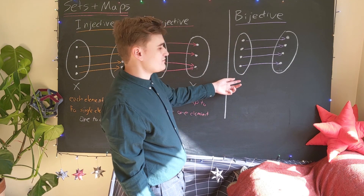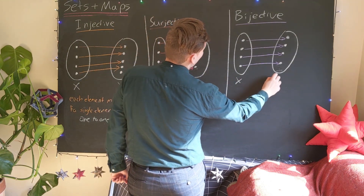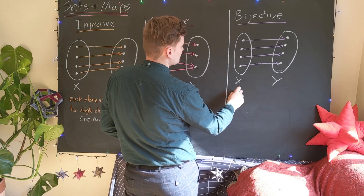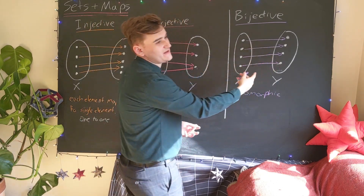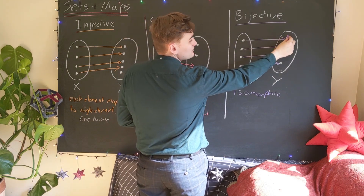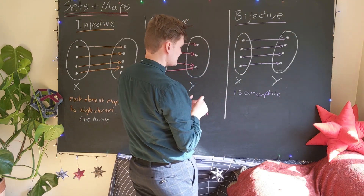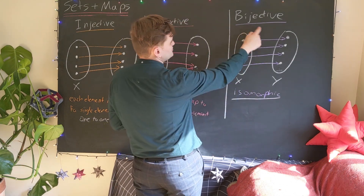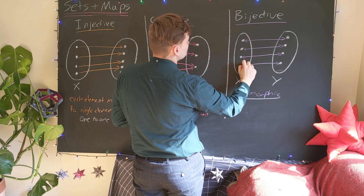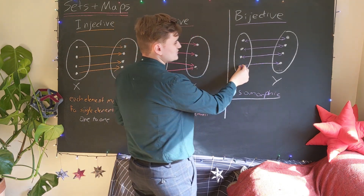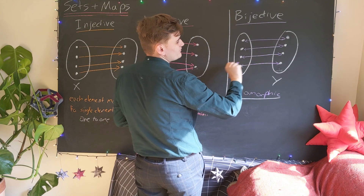A bijective map is the kind of map we're most interested in, because if we can construct a bijective map between two sets, then those two sets are said to be isomorphic — with the caveat that this map has to be invertible, meaning there's a concrete way to go in the other direction. If two sets are isomorphic, the elements of one set can be talked about as being the same, in a sense, as the elements of the other set, because we can freely move between them through this bijection.